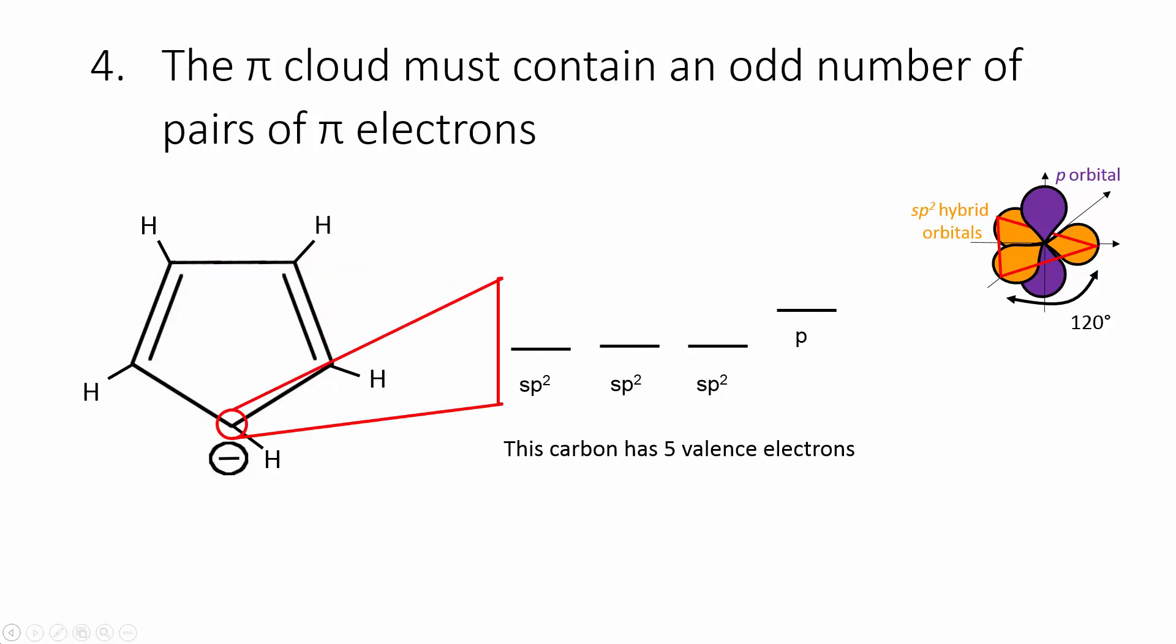Now, the question is, what's going on with the carbon at the bottom? Well, normally carbon has four valence electrons, right? But this is the negatively charged anion, so now this carbon has five valence electrons.